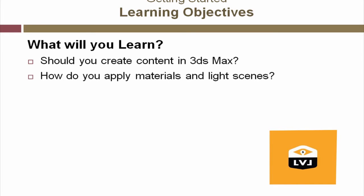Applying materials and lights is in many ways what 3ds Max is all about. This is where developing your skills can really contribute to the visual quality of your final production. It is entirely possible to take a poorly made 3D model and make it look fantastic just by adding well-created materials and properly set up lighting. On the other hand, you can take a meticulously crafted model and make it look bad fairly easily. We'll go through an overview of how to apply materials, how to create lights, and how those two things fit into the production process.